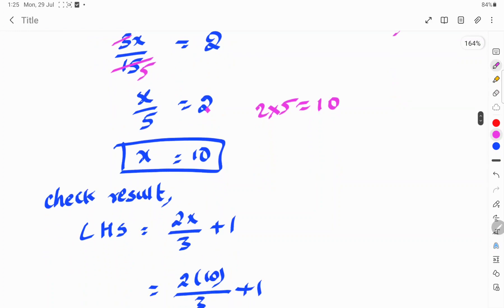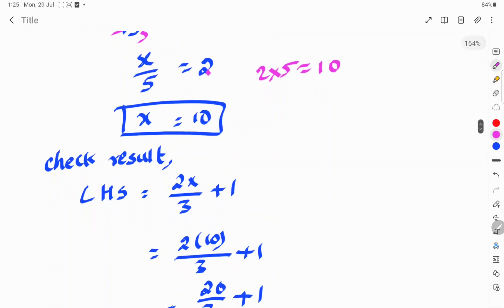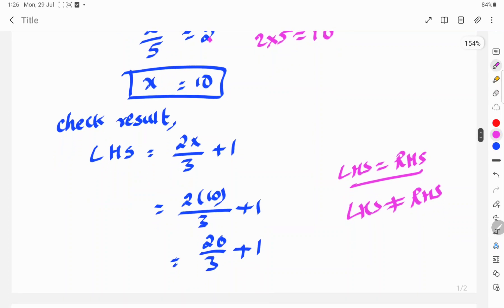Let's check the solution. Is x equal to 10 correct or not? Then you will check this way. Check result: LHS is equal to RHS. If LHS equals RHS, then equation is correct. If LHS is not equal to RHS, then equation is wrong and the x value is wrong. So, check it.